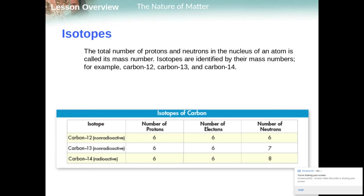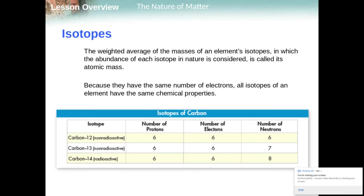The total number of protons and neutrons in the nucleus of an atom is called its atomic mass number. So isotopes are identified by their mass numbers. So carbon 12, 13, and 14. The weighted average of the masses of an element's isotopes give it the atomic mass. Because it's the same number of electrons, all isotopes of an element have the same chemical properties.